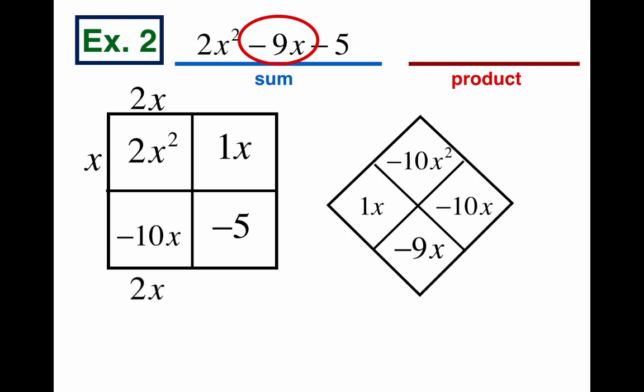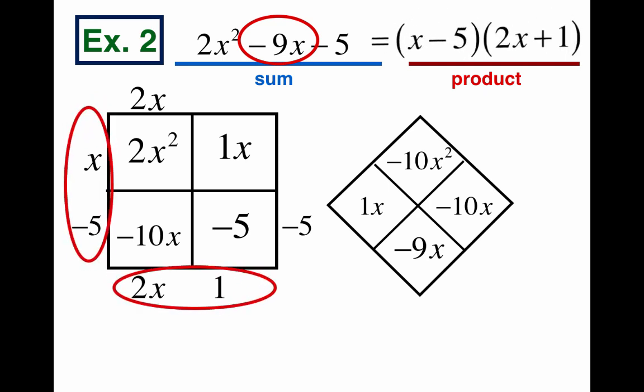And then let's take that 2x down. What do we got to times 2x by to get negative 10x? Well, we got to times it by negative 5. All right, then take that negative 5 over. What do we got to times negative 5 by to get negative 5? So if we times it by 1, we get negative 5, which means we have our answer. Our answer is x minus 5 and 2x plus 1. That's our length and width. That's our product. x minus 5 and 2x plus 1. And we've got our solution. Nice.